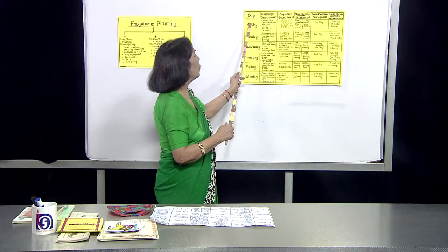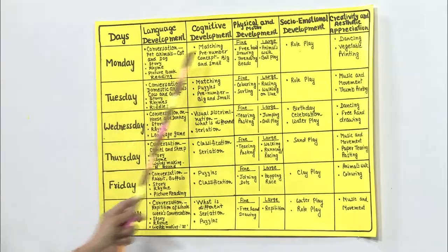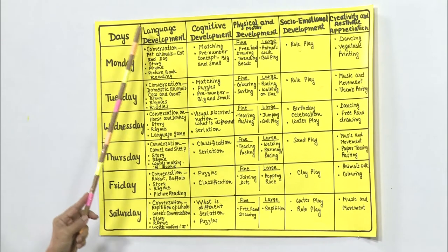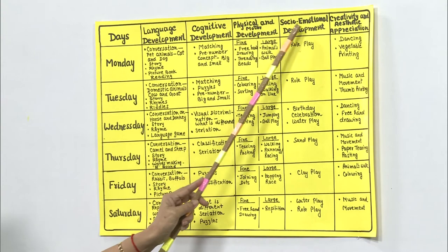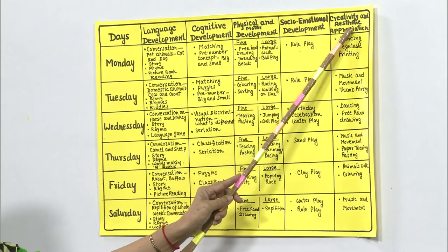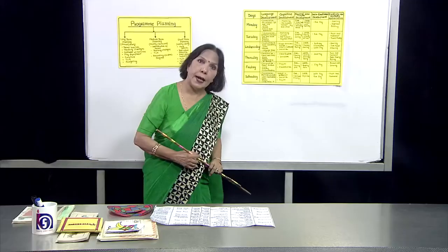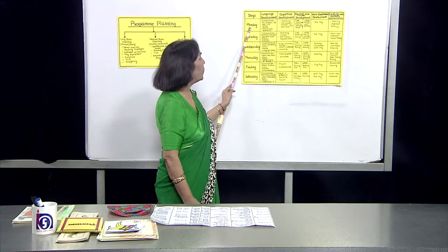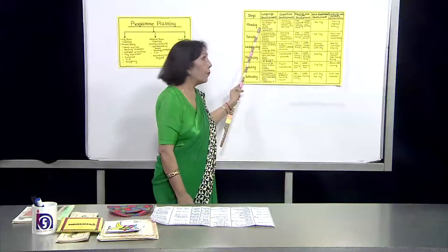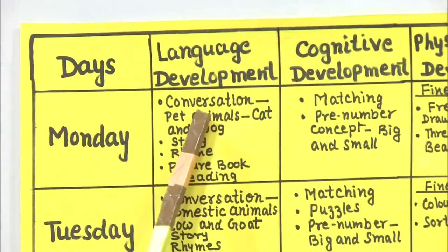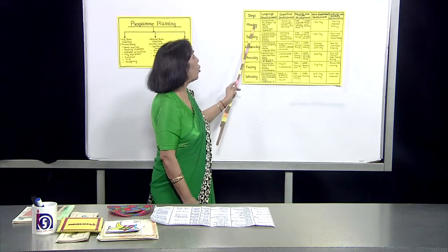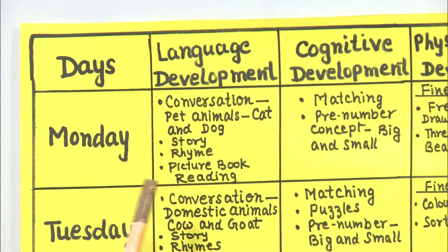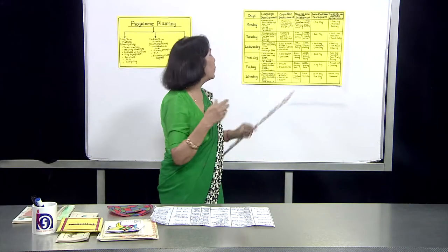Here is an example of short-term weekly planning. All the domains are covered: language development, cognitive development, physical and motor development, socio-emotional development, and creativity and aesthetic appreciation. The theme is 'animals.' On Monday, for language development, we will do a conversation activity. In that conversation, we will talk about cat and dog — two animals.